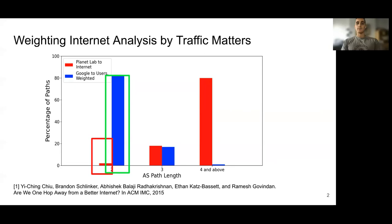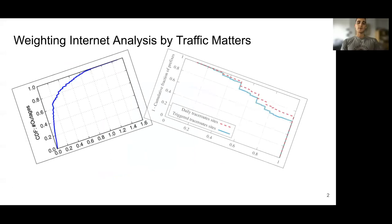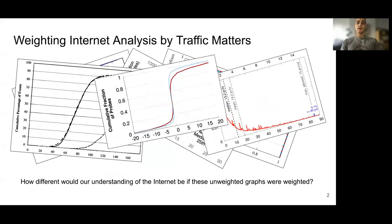These different answers can lead to different research agendas or approaches on how to optimize routes or address other challenges. Unweighted analysis of internet properties are common. I wonder how different we would think the internet was if all these unweighted graphs were weighted. Do outages impact many users? Are most paths with inflated latency congested because they have lots of users, or long because no one uses them, so we don't care to shorten them?